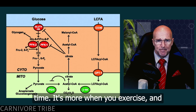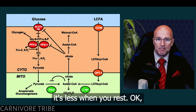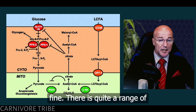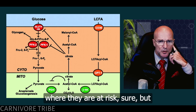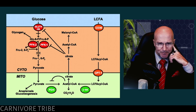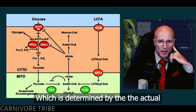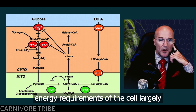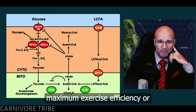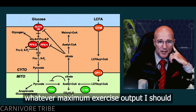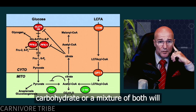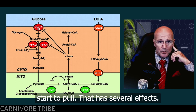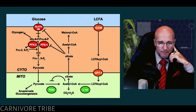That maximum rate is higher when you exercise and lower when you rest. There is quite a range of operating capacities in mitochondria — they can upregulate quite vastly from their resting state — but nonetheless there is an absolute limit. When the mitochondria reach that limit, determined largely by the actual energy requirements of the cell at that time, below maximum exercise output, the fat or carbohydrate or a mixture of both will start to pool.